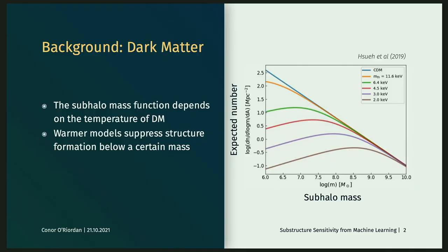So, why is that important? Well, it's a prediction of CDM that there should be a population of low mass dark matter subhalos in and around the main halos of galaxies. And basically, the distribution of these halos in terms of mass depends exactly on the dark matter model. As you move away from CDM, which is the blue line here showing the expected number of subhalos as a function of mass, you move to a warmer model or a lower mass particle. You start to see a suppression of substructure formation below a certain mass. So, measuring this function in the universe gives us a constraint on the dark matter model.